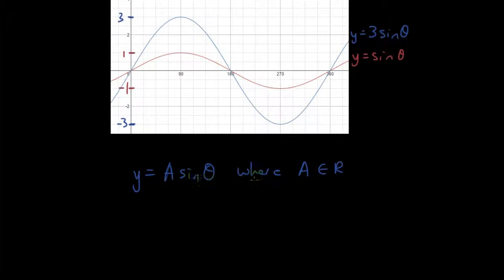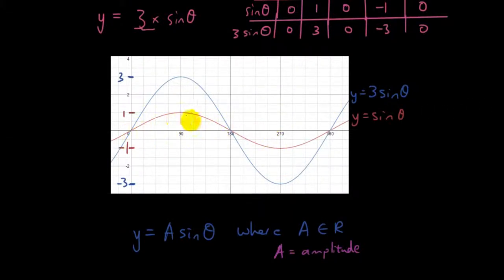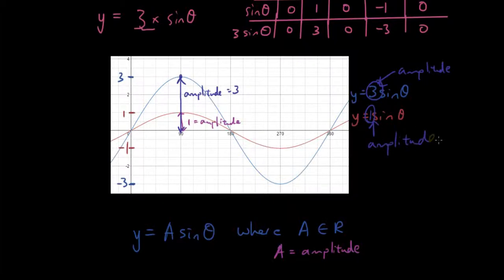There are two things that a does. Number 1, a is the amplitude. Because, if you have a look at our two graphs, the red one has an amplitude of 1, and the blue one has an amplitude of 3. So the number in front is the amplitude. Obviously here, without a number there, it just means 1. 1 times sine theta. The number in front is the amplitude.